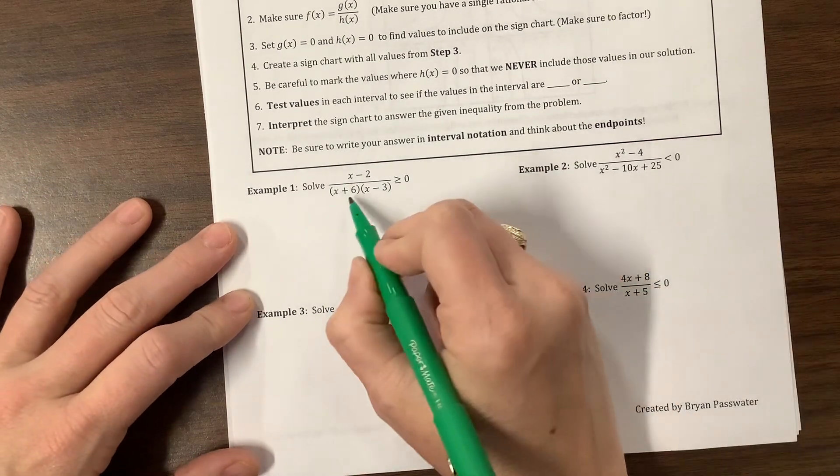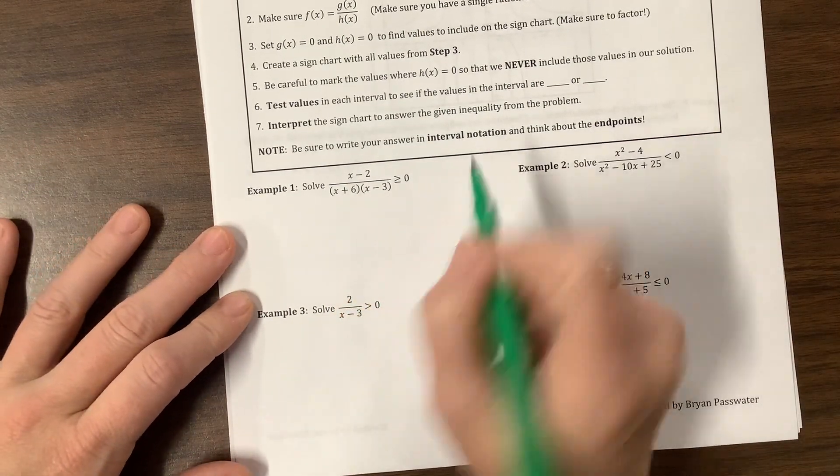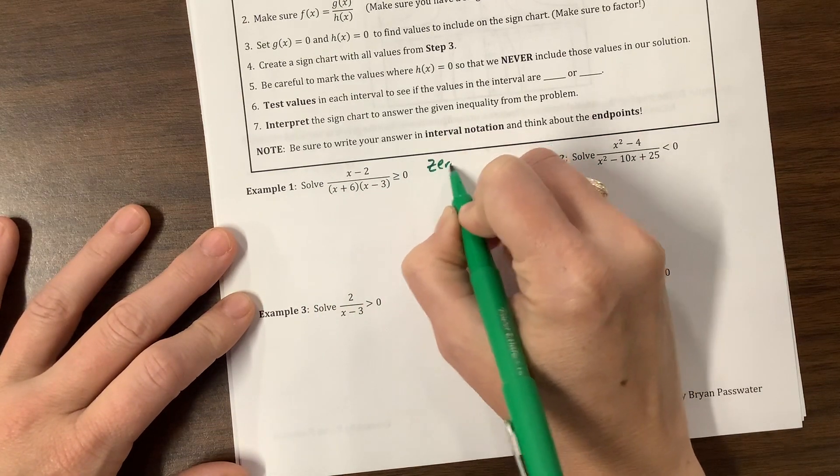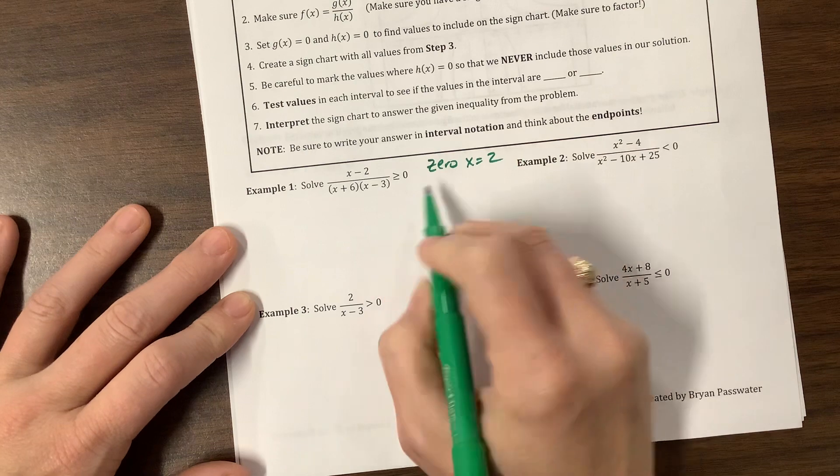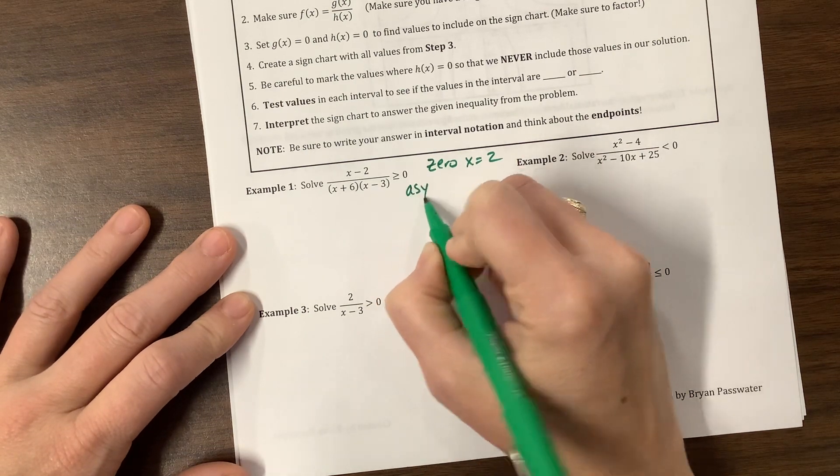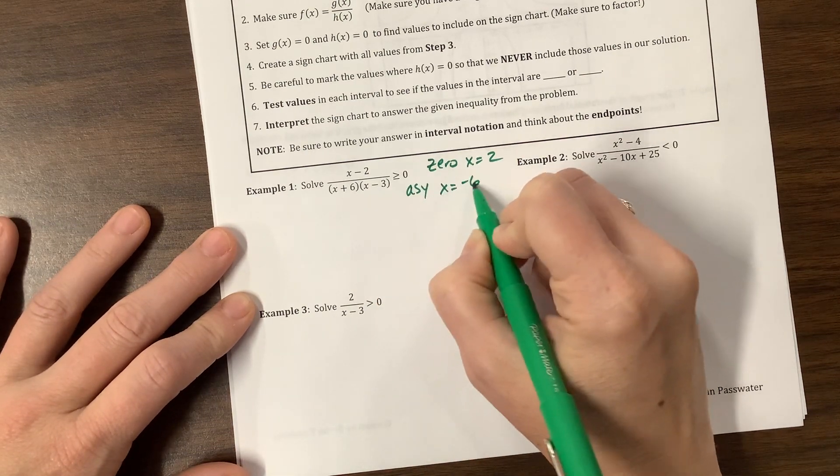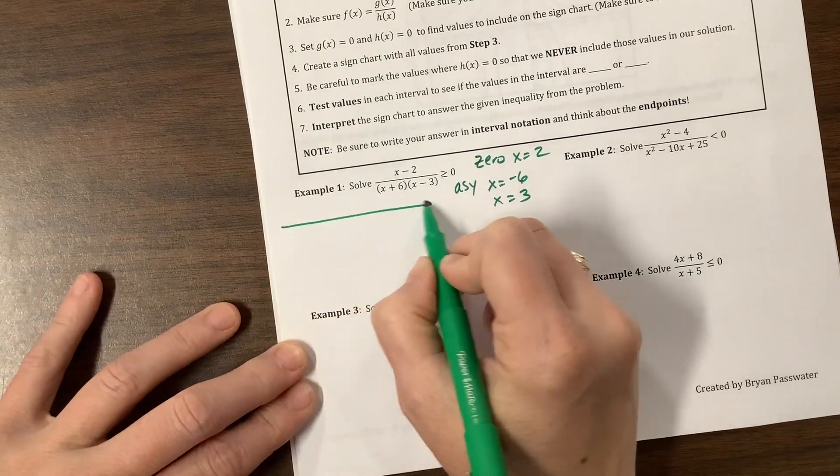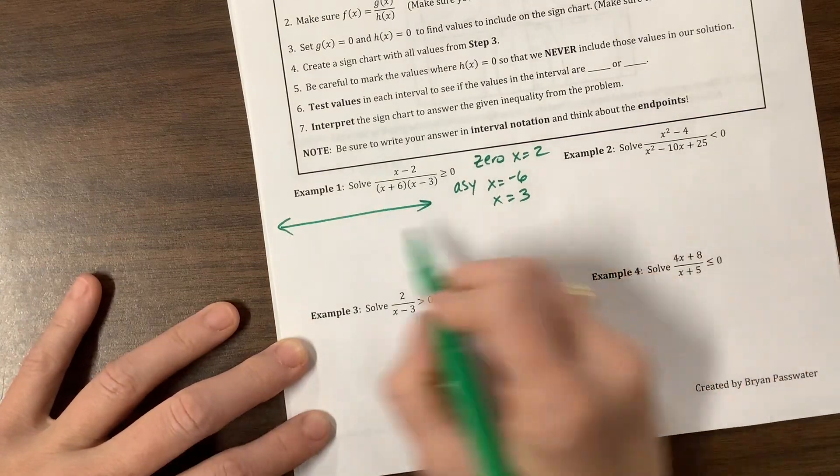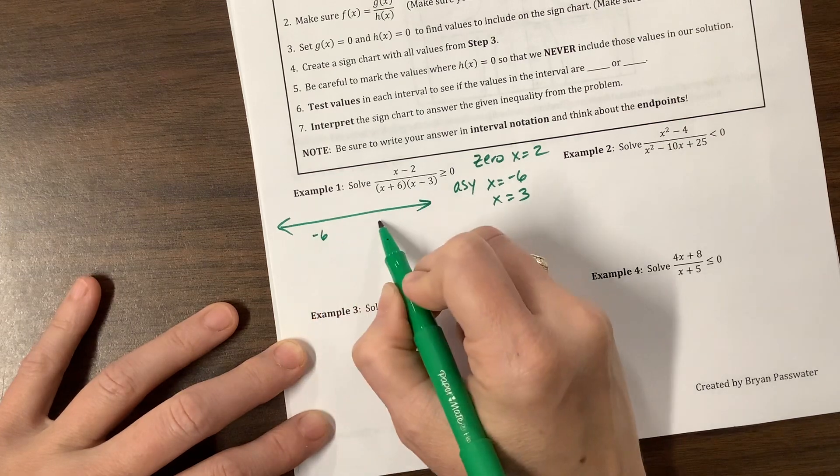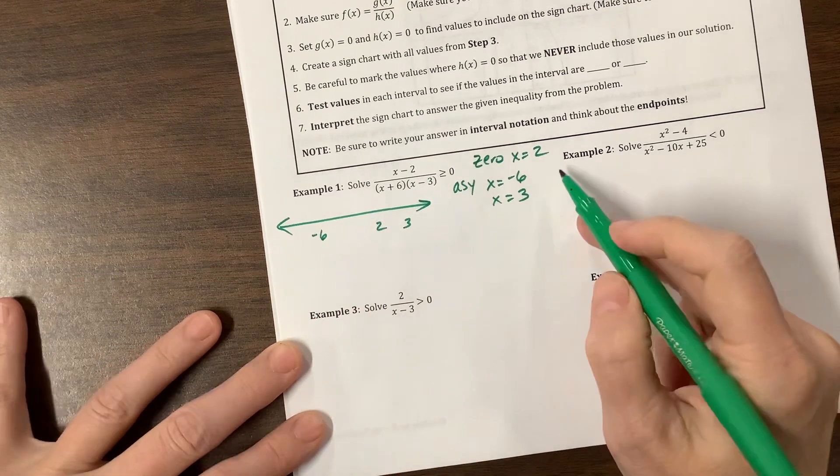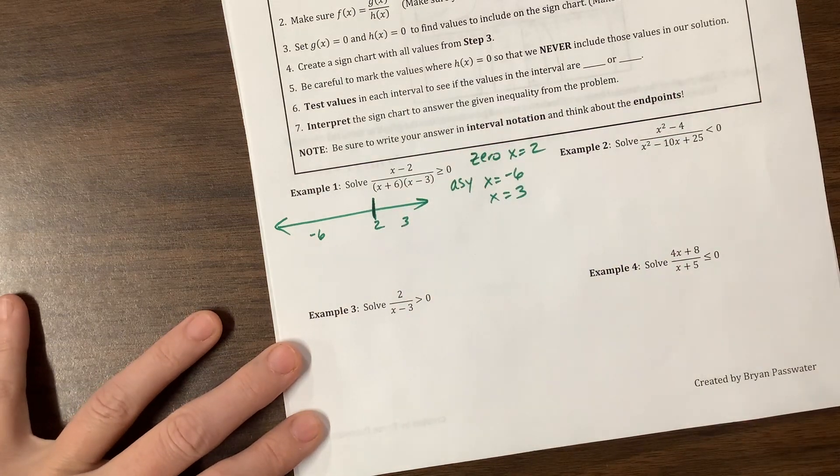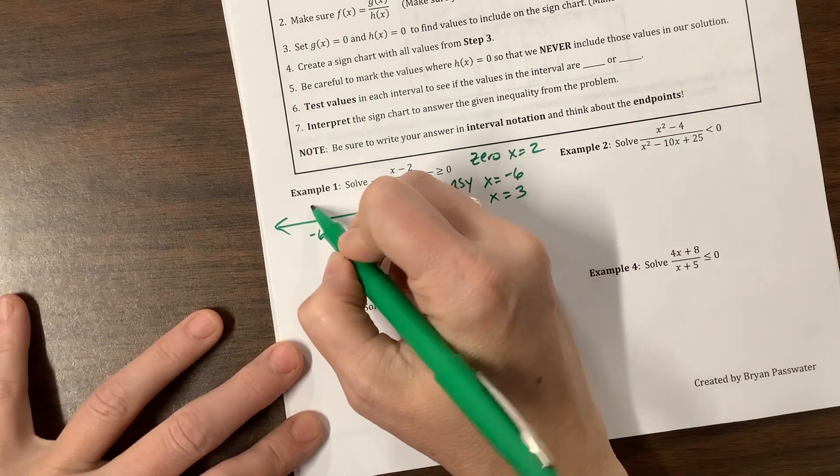So with this one, we need to know vertical asymptotes and we need to know zeros. So I have a zero when x is equal to 2. I have a vertical asymptote when x is equal to negative 6 or when x is equal to positive 3. So when I draw this, I'm going to put negative 6 and then 2 and then 3. The zero gets a solid line that reminds us that we could equal that if they allow us to equal, but the asymptotes get dotted lines.